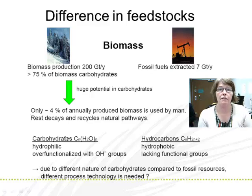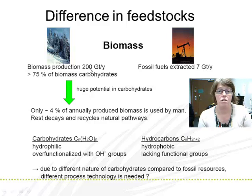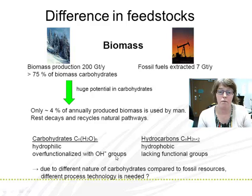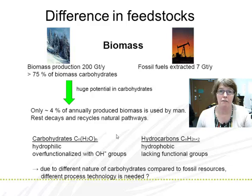We should also discuss the difference between biomass and fossil raw material. Fossil fuels are extracted — usually around 7 gigatons annually — but biomass production is huge; it's a very abundant raw material composed of carbohydrates, and very little is utilized annually. There is also a big chemical difference: biomass contains hydroxyl groups, is over-functionalized with hydroxyl groups, contains oxygen, and is a very hydrophilic feedstock, whereas fossil feedstock is a hydrocarbon — a hydrophobic feedstock. So if the feedstock type is different, we also need to develop a different type of process technology.